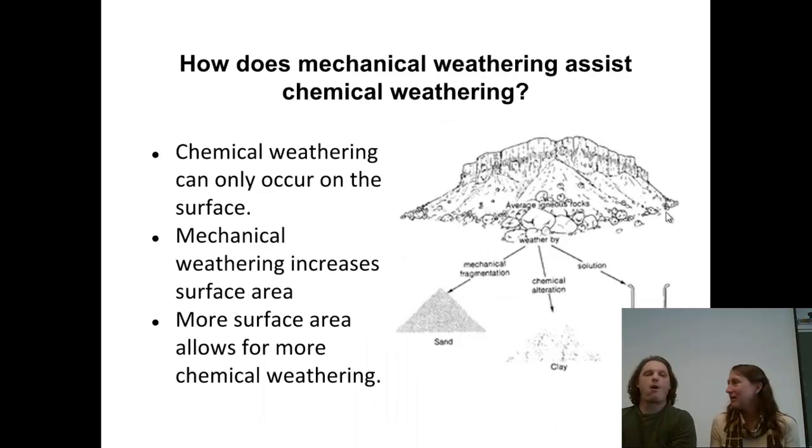Talking about how mechanical weathering assists chemical weathering. We kind of talked about this in the last slide. So the more surface area that we have, the more that chemical weathering can act to break down that material. In the picture here, we're seeing some sort of little cliff and rocks falling down from the cliff. Maybe they broke off because of frost wedging.